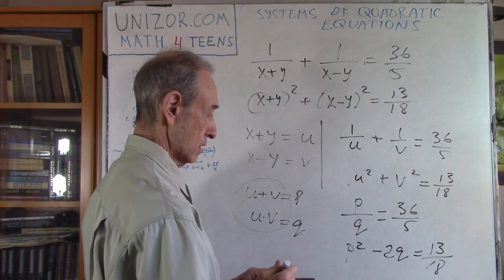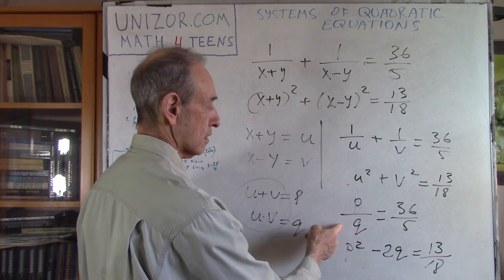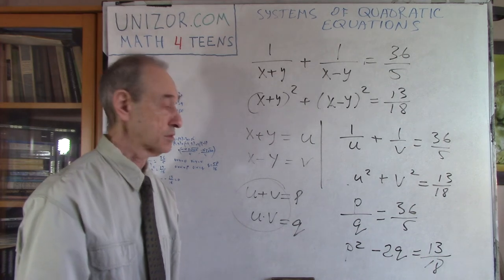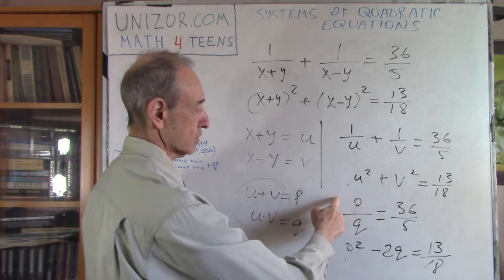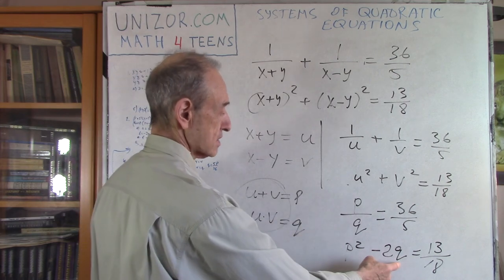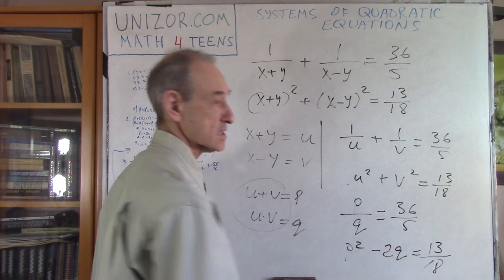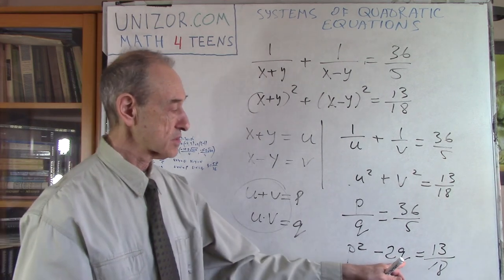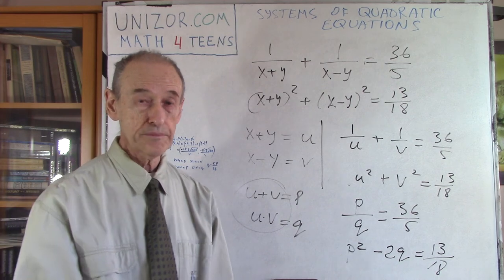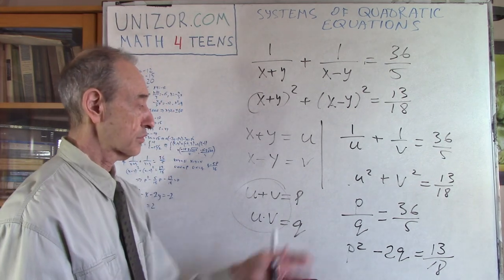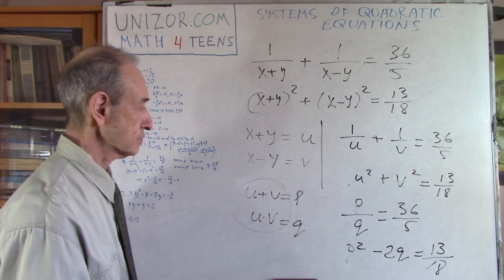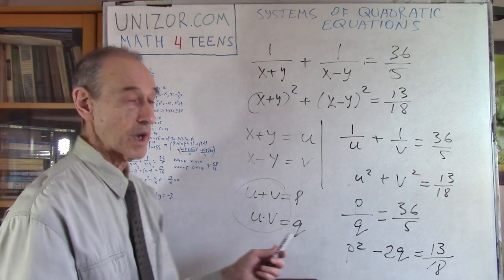Is it easier? Well, absolutely. Because I can get Q from here, substitute it to here, and it will be a quadratic equation. So Q would be equal to 5 36ths of P. I will substitute it here, and I will have P square minus something P equals to something. So it's a quadratic equation which can be solved for P, knowing P will get Q, etc. So that's the way how to do it.